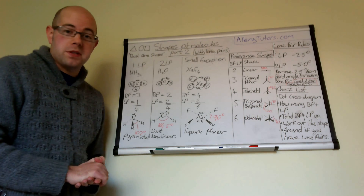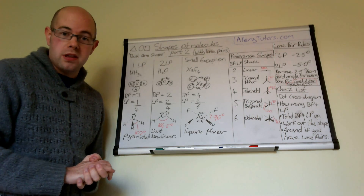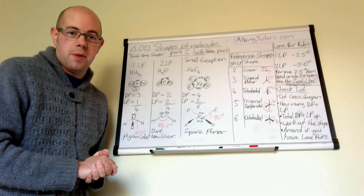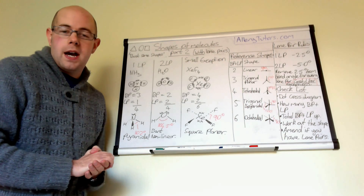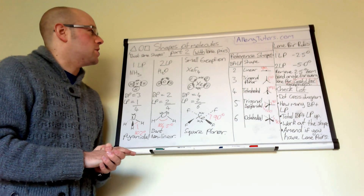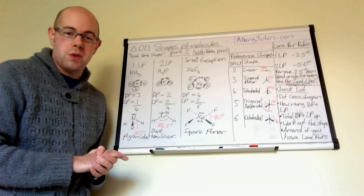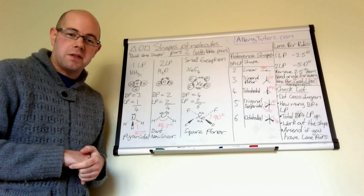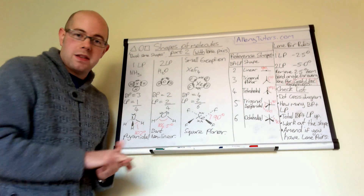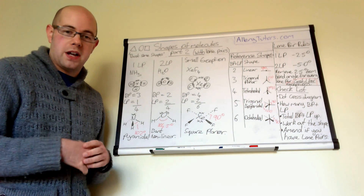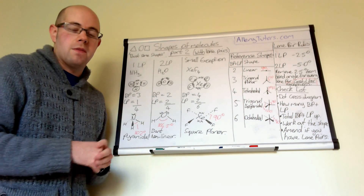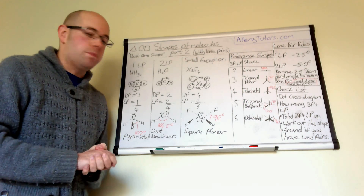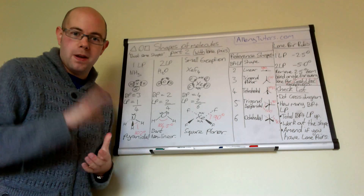That's how you work out shapes of molecules with lone pairs. There is another video — click the link just below — that shows you how to deal with shapes of molecules when they are ions. Ions behave in a very similar way to this, except you just have to do one extra step. Take a look at that video to find out. I hope that helps. Bye.